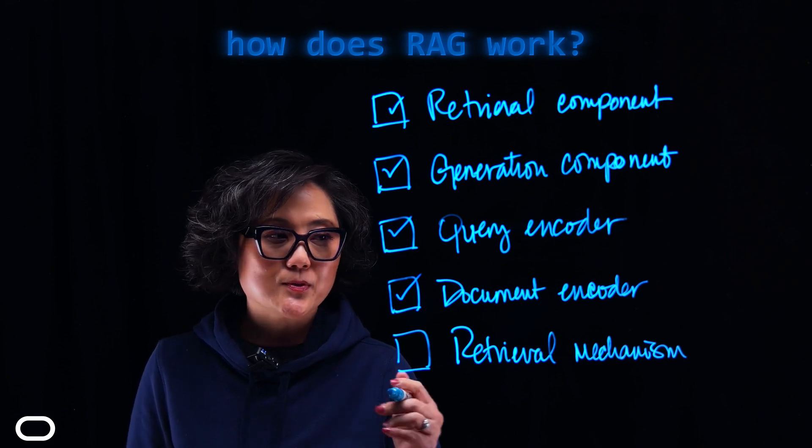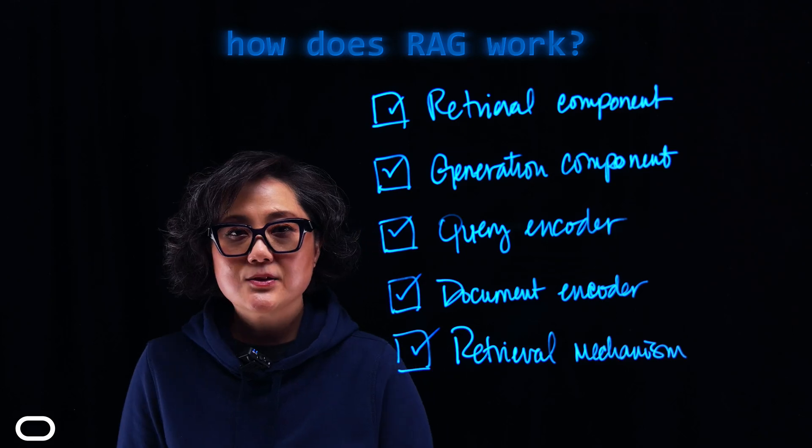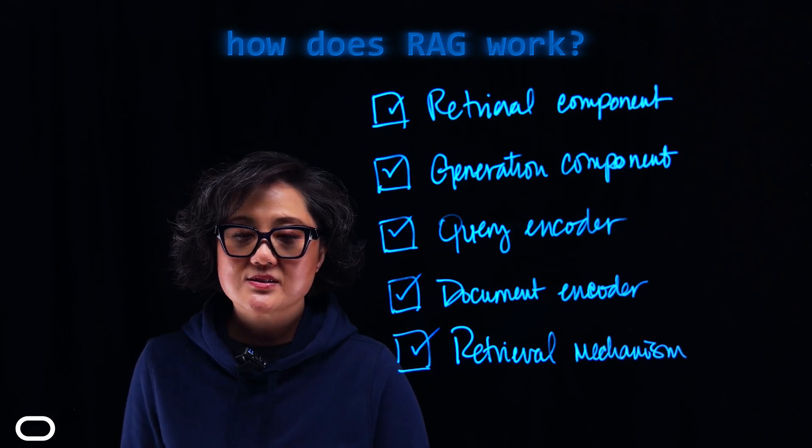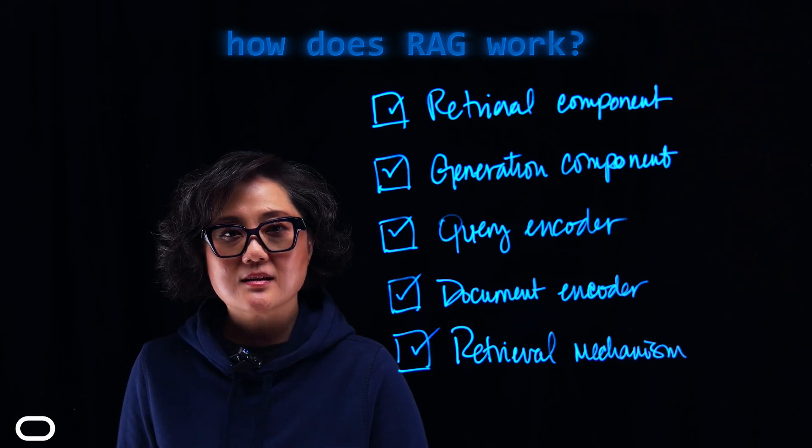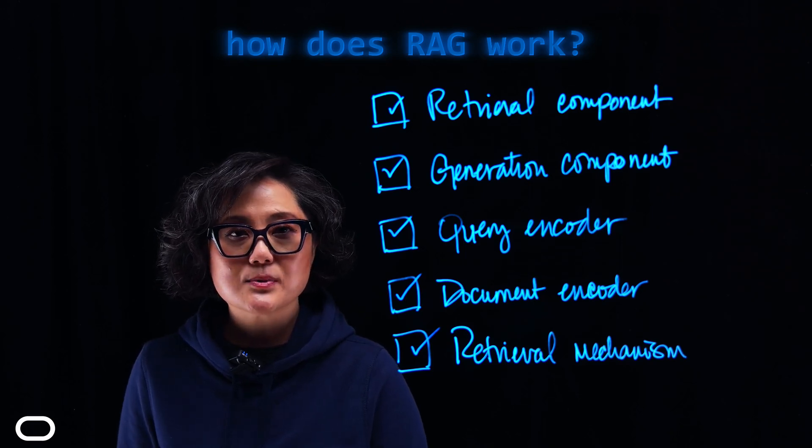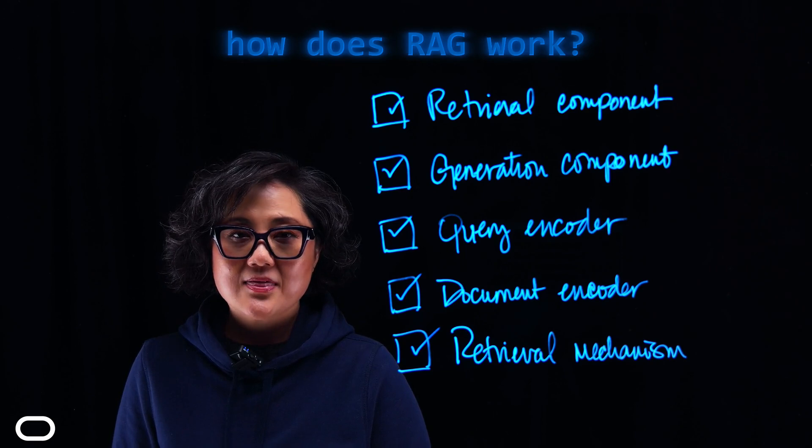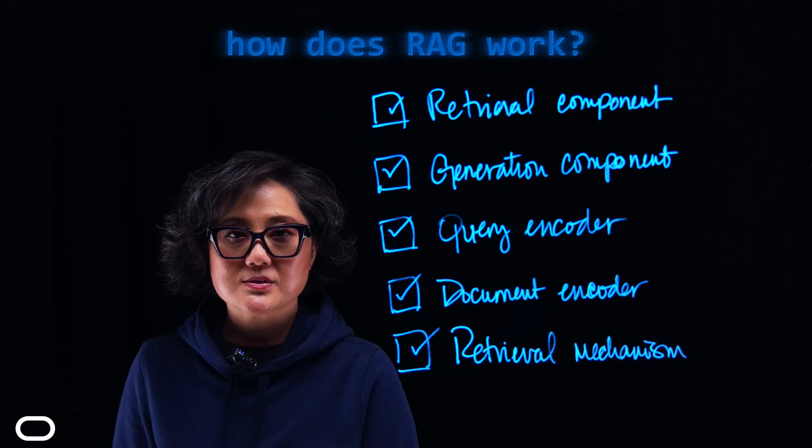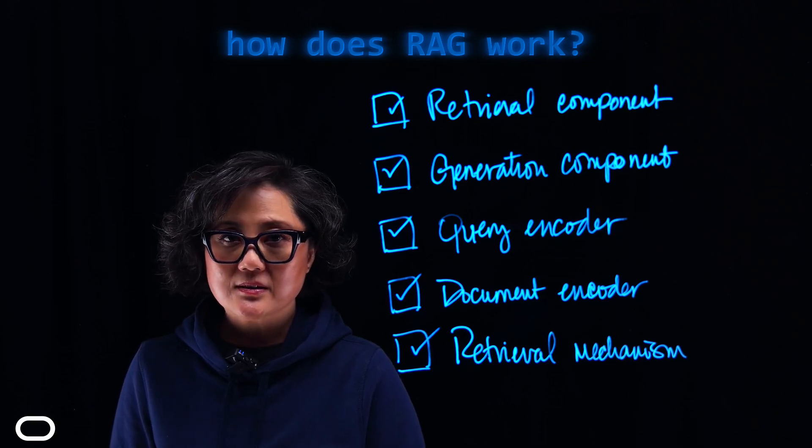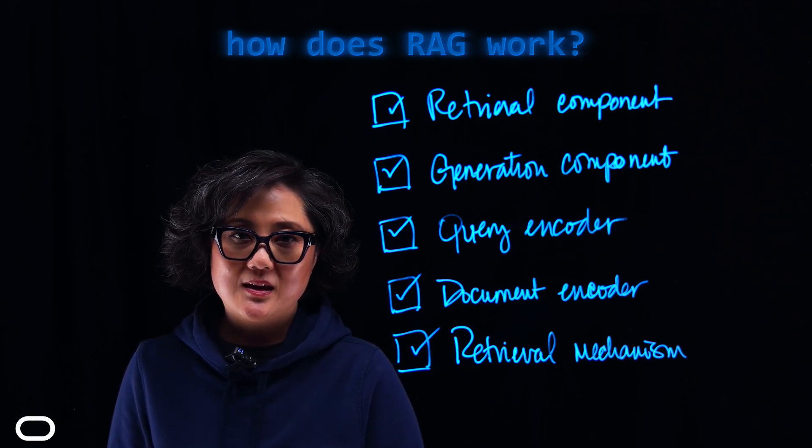Next, we have Retrieval Mechanism. In Retrieval Mechanism, a method such as Cosine Similarity or Dot Product scores and ranks the relevance of documents based on the encoded query and document vectors. This is called similarity scoring. Then it determines the most relevant documents based on those similarity scores to be used by the generator, which is referred to as Top K Retrieval.